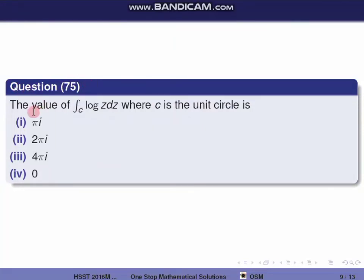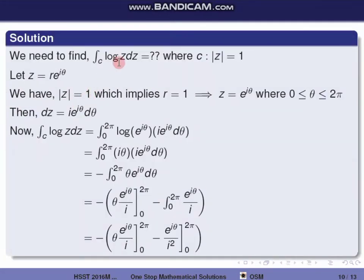Next question, question 75. Find the value of the integral over c of log z dz, where c is the unit circle. To evaluate this integral, we parametrize the unit circle: z equals e raised to i theta, so mod z equals 1. For 0 less than or equal to theta less than or equal to 2π, z equals e raised to i theta, and dz equals i e raised to i theta d theta.